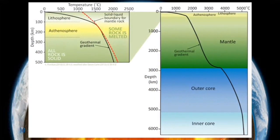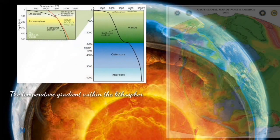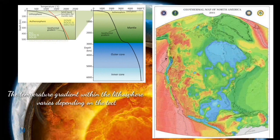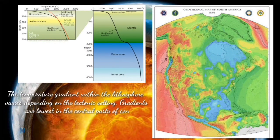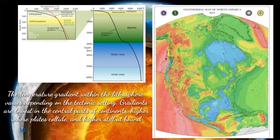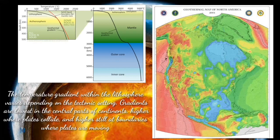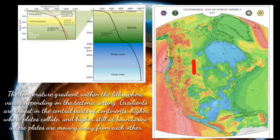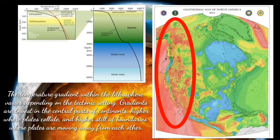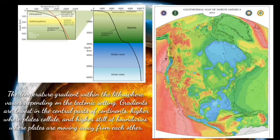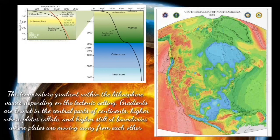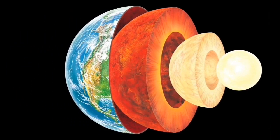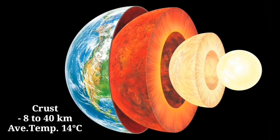This figure shows the geothermal gradient in each layer. As you can see in the graph, the temperature gradient within the lithosphere varies depending on the tectonic setting. Gradients are lowest in the central parts of the continents, higher where plates collide, and higher still at boundaries where plates are moving away from each other.